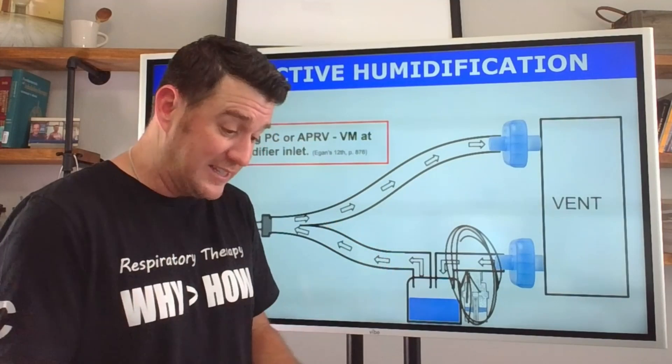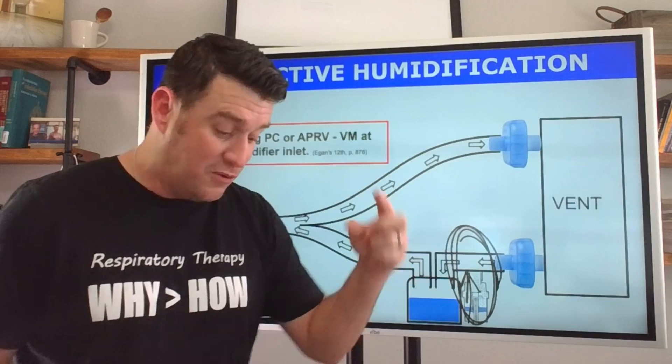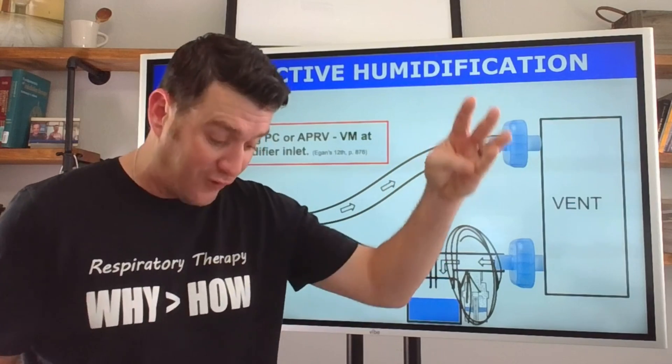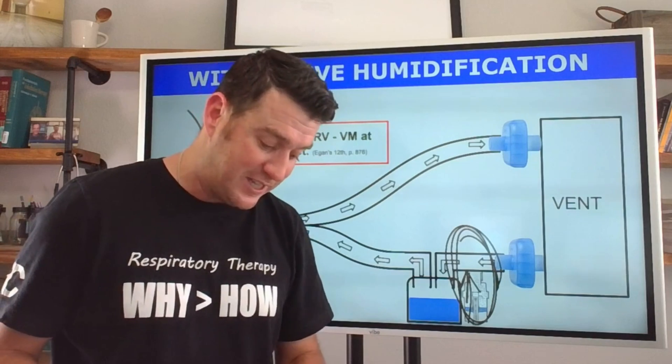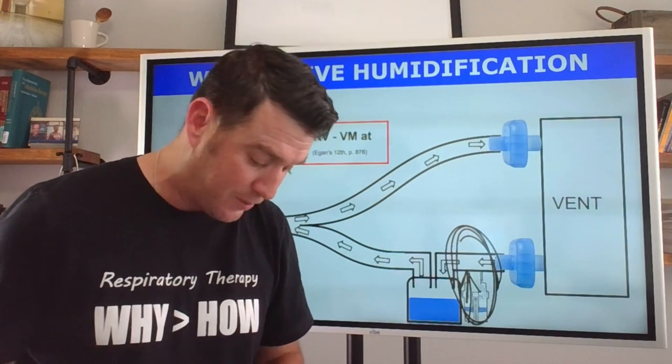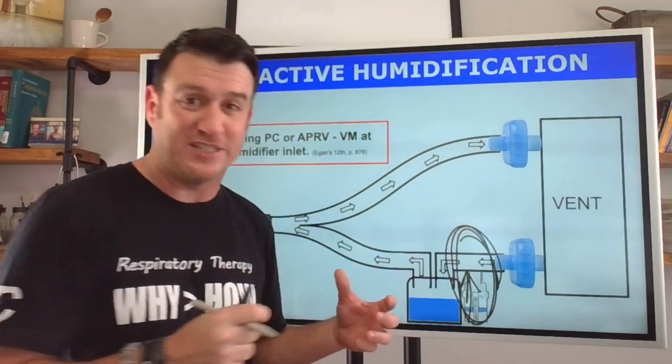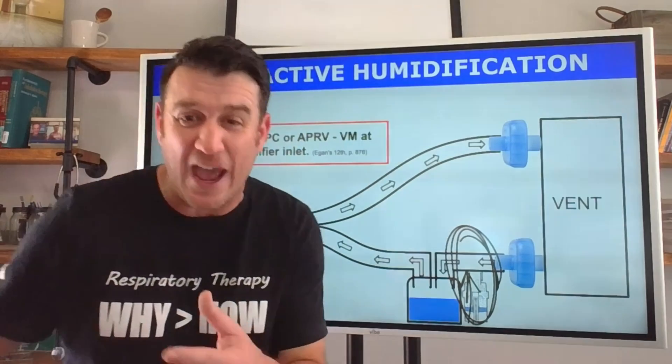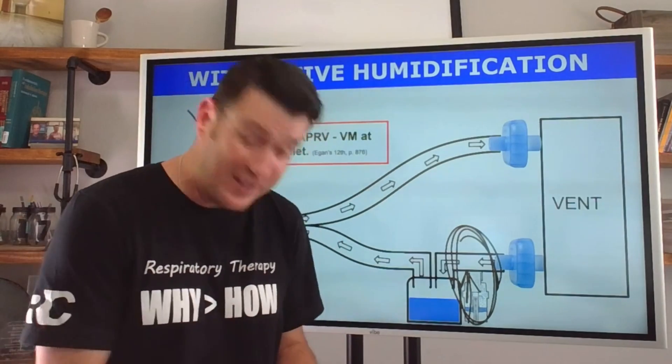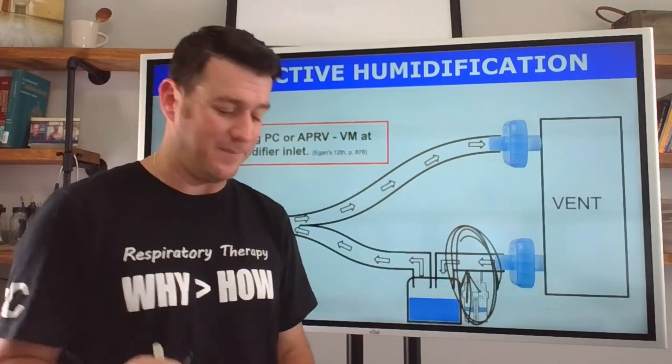I think sometimes we just get in a habit of doing it all the same. We don't think about which mode, we don't think about I to E ratio. Egan's says that here on page 875, it says when nebulizer output, humidity level, tidal volume, flow, and I to E ratio are optimized deposition can increase up to 15%. When not optimized, we know that deposition ranges anywhere from about 1.5 to 3%.